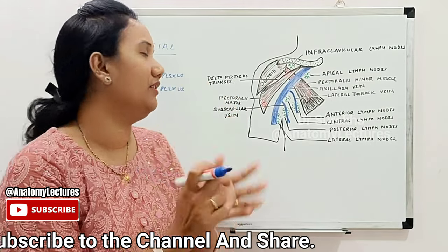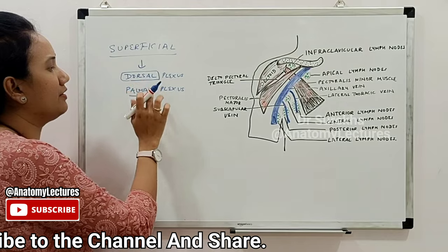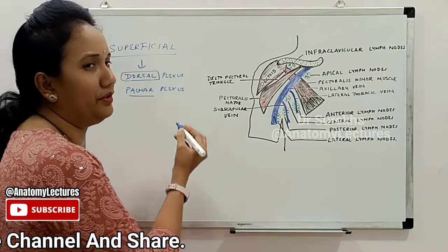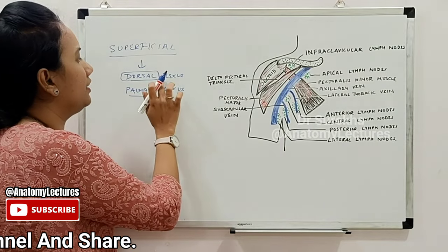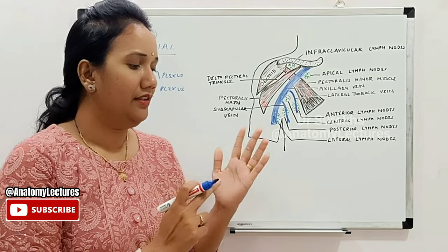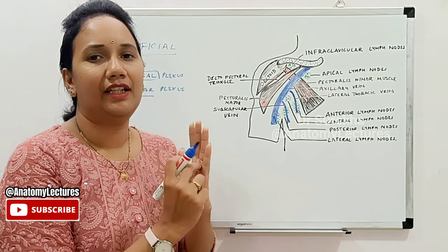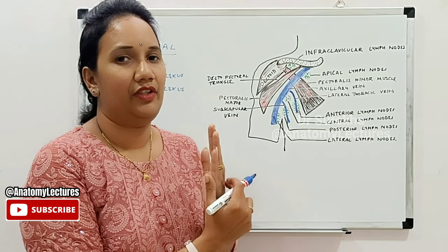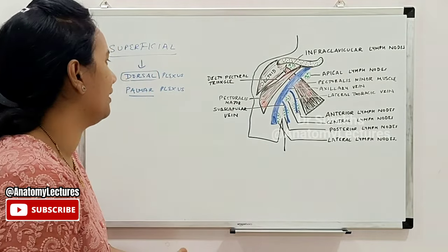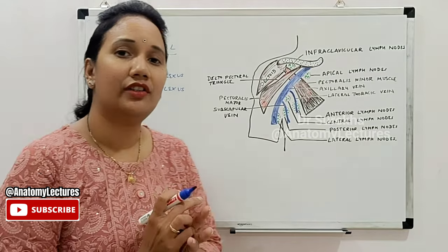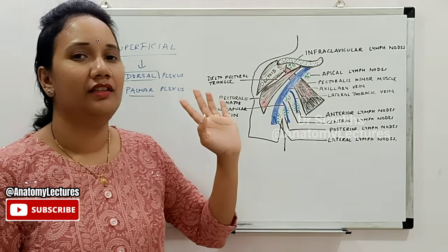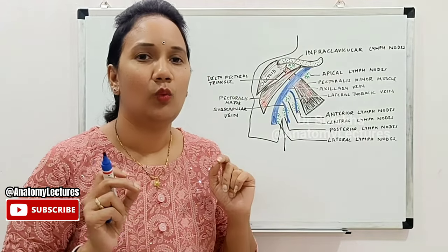There is a communication between the dorsal and palmar plexus through the webs of the fingers via communicating channels. The dorsal plexus will receive all the lymph from the dorsum of the hand, from the digits, and partly from the palmar plexus through this communication. The palmar plexus will drain all the lymph from the palmar aspect of the hand.